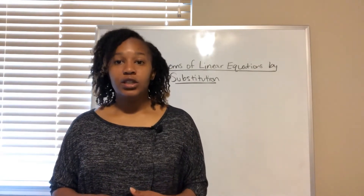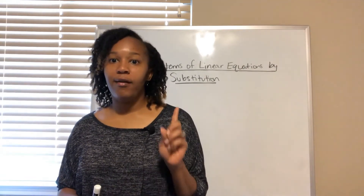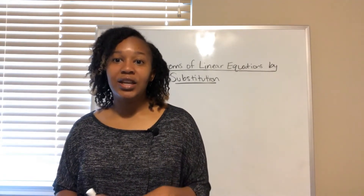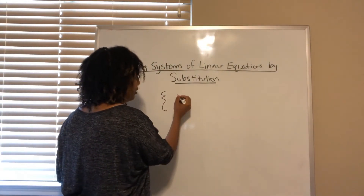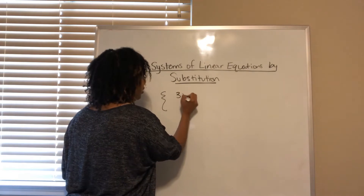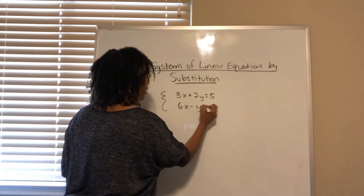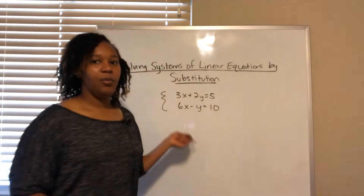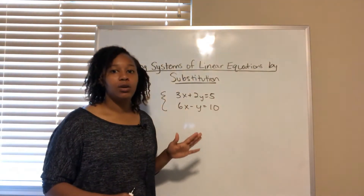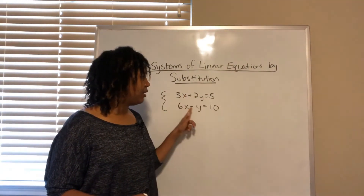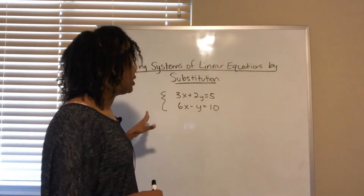Let's recall what a system of linear equations is. A system of linear equations is when you have more than one equation that's linear. For example, it may look like this — usually written inside a brace: 3x plus 2y equals 5 and 6x minus y equals 10. This is an example of a system of linear equations. How do you know it's linear? The highest exponent on the variables is 1.